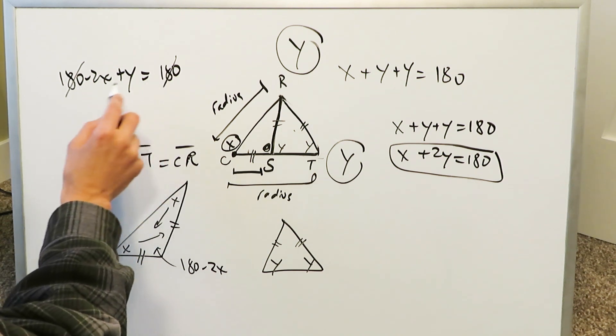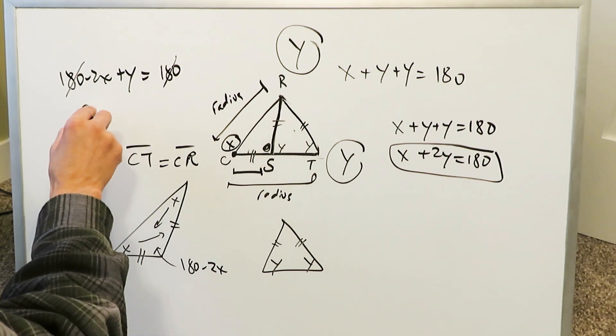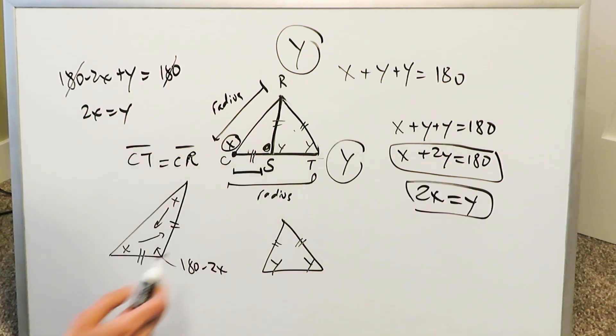180s cancel out. Take the 2X or the Y on the other side, you'll have 2X is equal to Y. And this right here represents our other linear equation for this system of two equations that we have now.